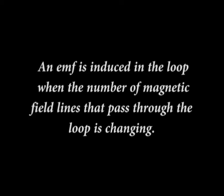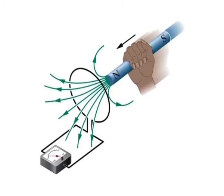The actual number of field lines passing through the loop does not matter; the value of the induced EMF and induced current are determined by the rate at which that number changes. In our first experiment, the magnetic field lines spread out from the north pole of the magnet. Thus, as we move the north pole closer to the loop, the number of field lines passing through the loop increases. That increase apparently causes conduction electrons in the loop to move and provide energy for their motion. When the magnet stops moving, the number of field lines through the loop no longer changes and the induced current and induced EMF disappear.